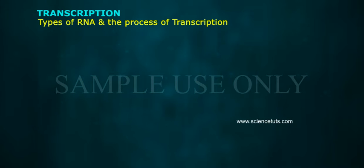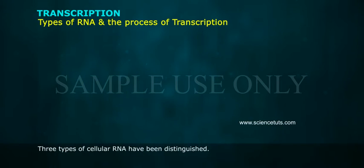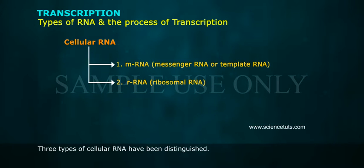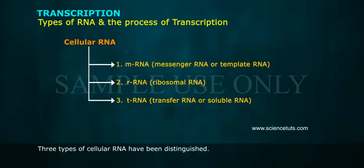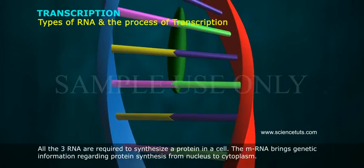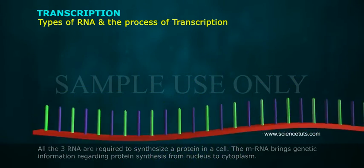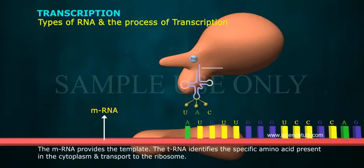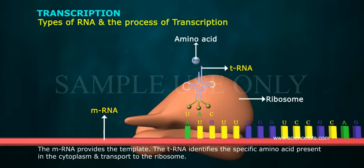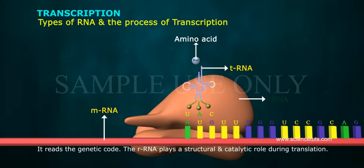Three types of cellular RNA have been distinguished, and all three are required to synthesize a protein in a cell. The mRNA brings genetic information regarding protein synthesis from the nucleus to the cytoplasm and provides the template. The tRNA identifies specific amino acids in the cytoplasm, transports them to the ribosome, and reads the genetic code.